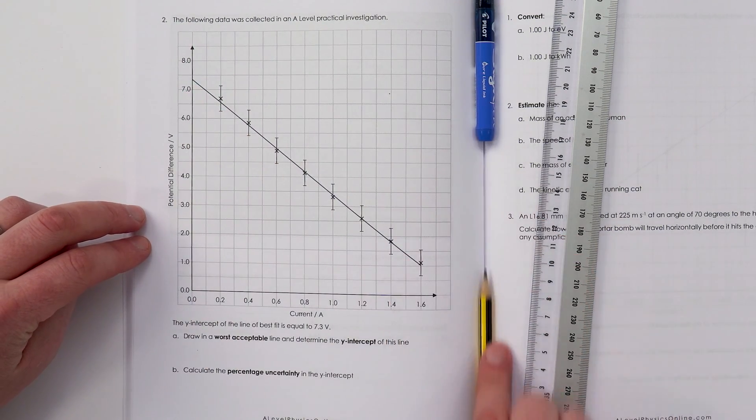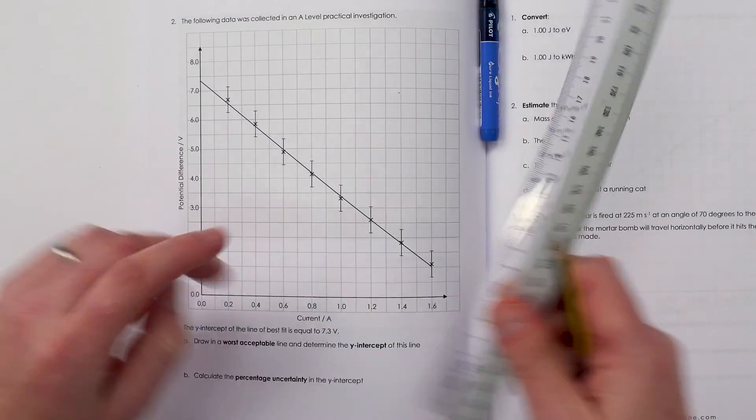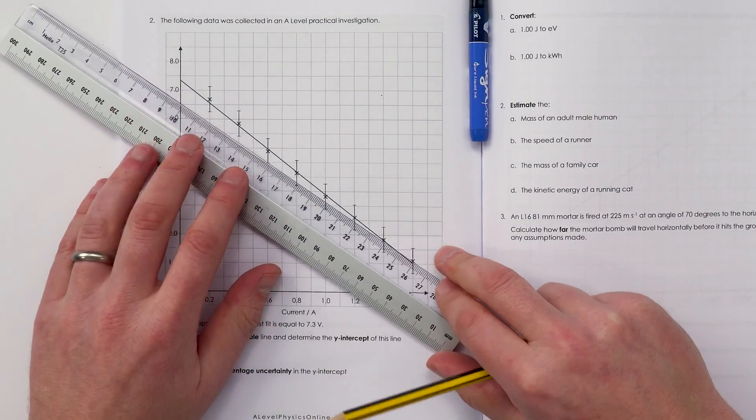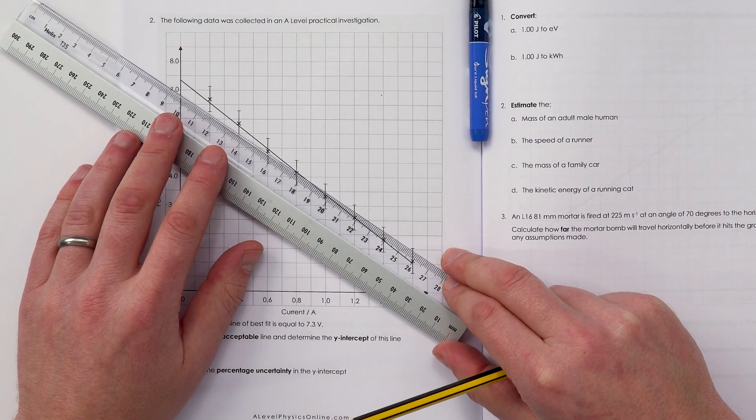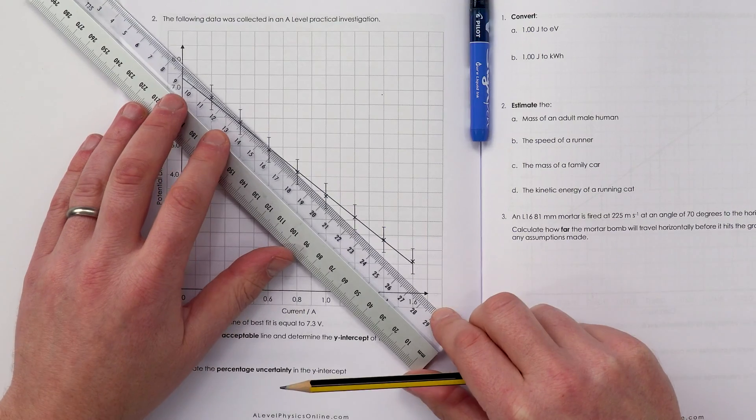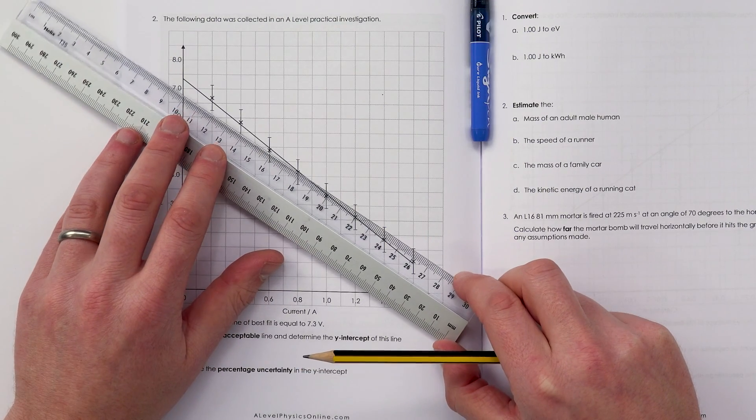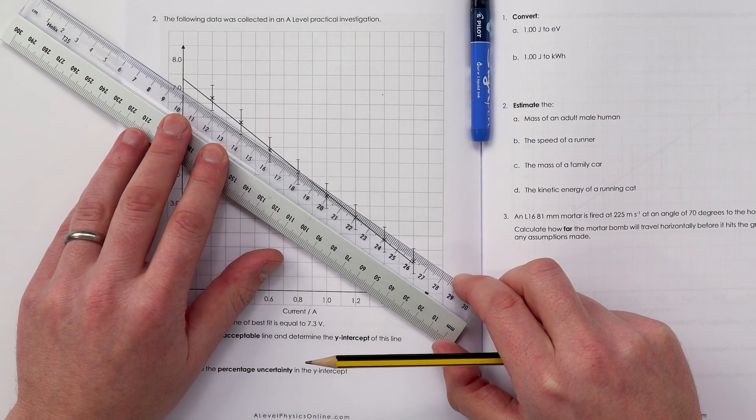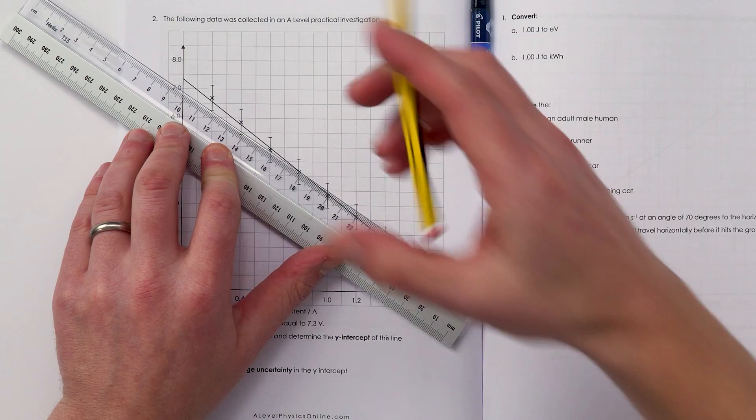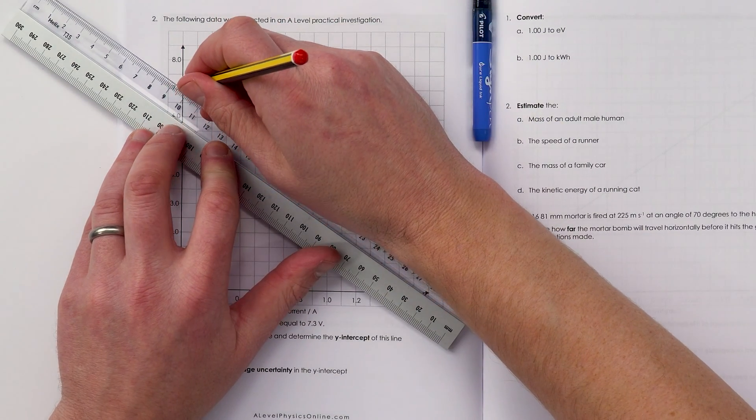Our line of best fit has already been drawn in. I'm going to be using a pencil and a 30cm clear ruler. The worst acceptable line still has to go through the error bars, and it could be steeper or shallower. I reckon I'm going to put in a shallower line, line it all up, and then just put it in like so.